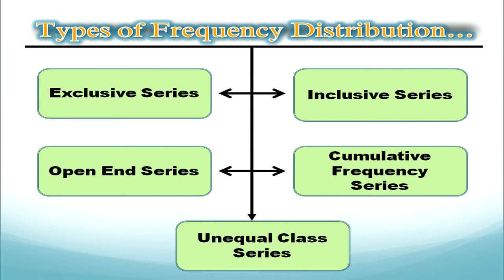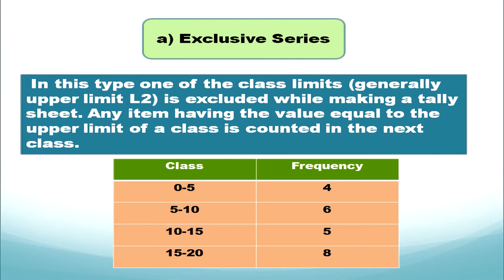The very first is exclusive series. In this type, one of the class limits — that is the upper limit — is excluded while making a tally chart. For example, in the class 0 to 5, the value 5 is not included. Any item having a value equal to the upper limit of a class is counted in the next class. Also, the class interval gap remains the same throughout.